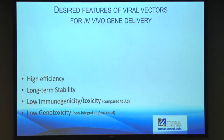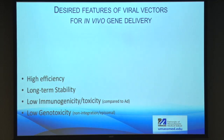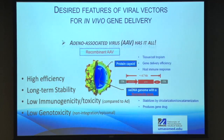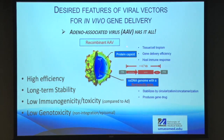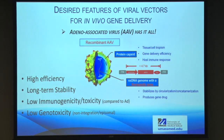In terms of gene therapy vectors, my wish list as a gene therapist is: first, high efficiency; second, long-term stability; third, no immunogenicity and toxicity — as compared to adenovirus, which is very toxic; and finally, no genotoxicity, meaning non-integrating or episomal. Adeno-associated virus has all of these. The AAV capsid determines tissue tropism, gene delivery efficiency, and regulation of host immune response. Different AAV capsids have different functions in those three categories.